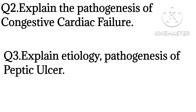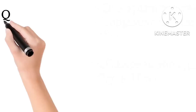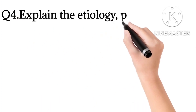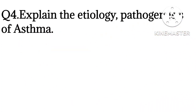For peptic ulcer, write the symptoms, complications, and pathogenesis. For a 10-mark answer, you must write complications, but for 5 marks, there is no need. If they ask complications in 5 marks, then you must write it. The fourth question is: explain the etiology and pathogenesis of asthma. For asthma, you also have to write the types of asthma.